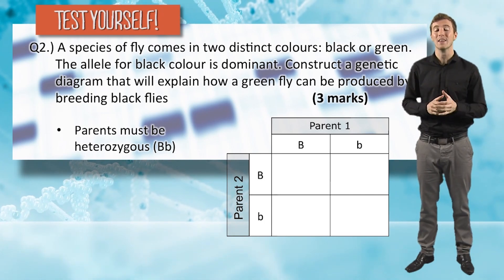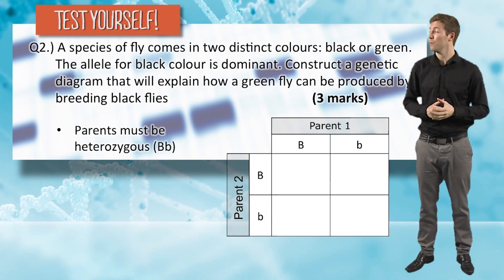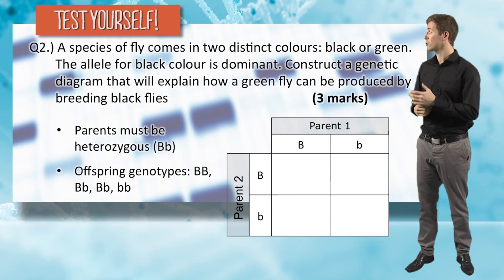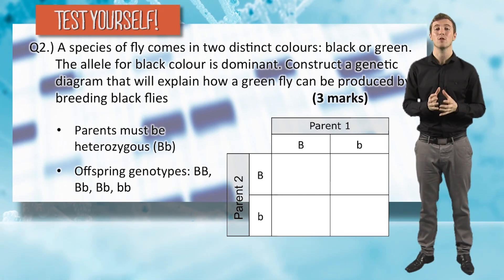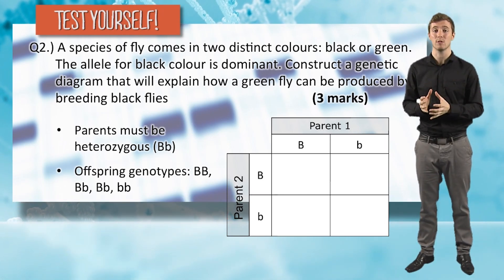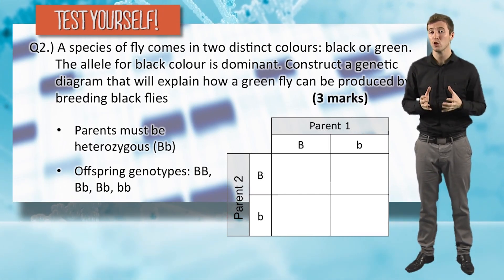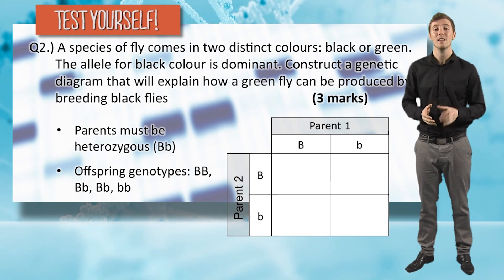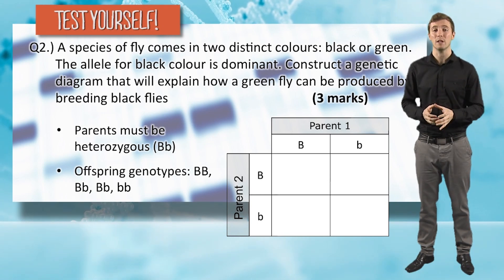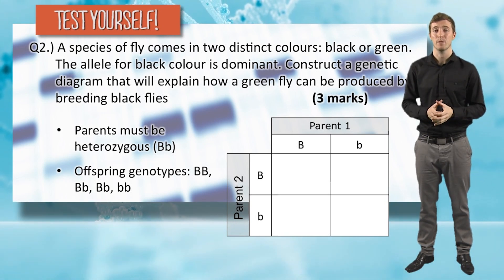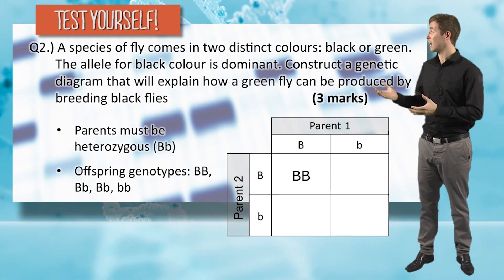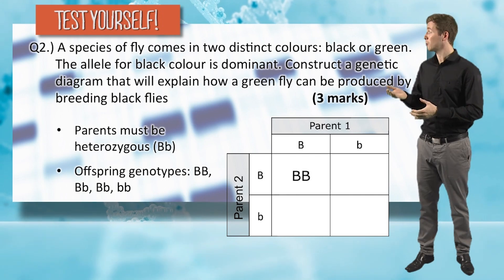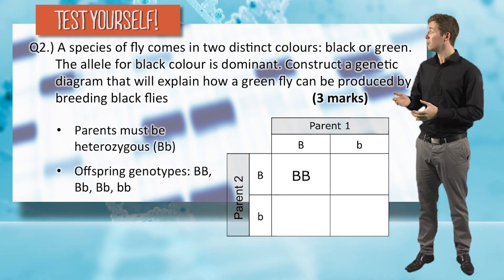The second thing you needed to do was clearly highlight the offspring's genotypes. This should have worked out relatively easily if you filled in your genetic diagram properly. You would have had the genotypes: capital B, capital B (homozygous dominant).